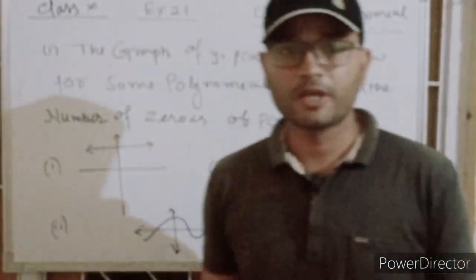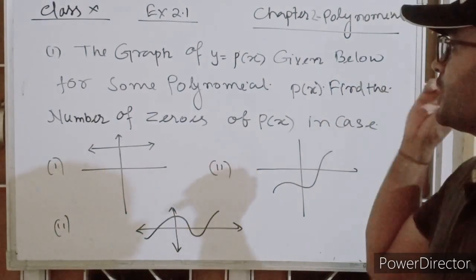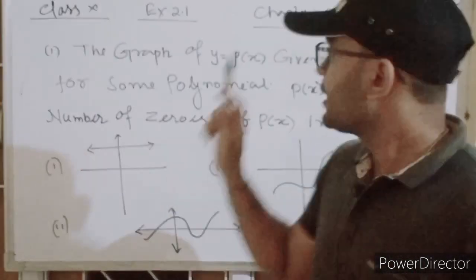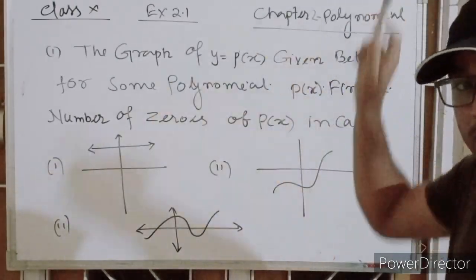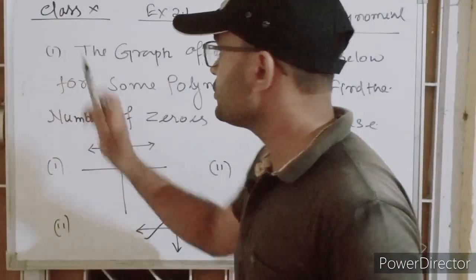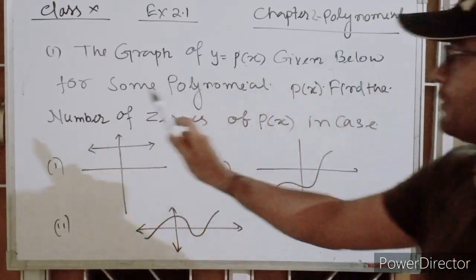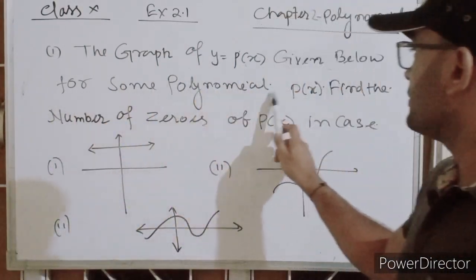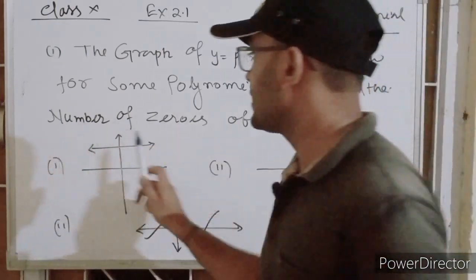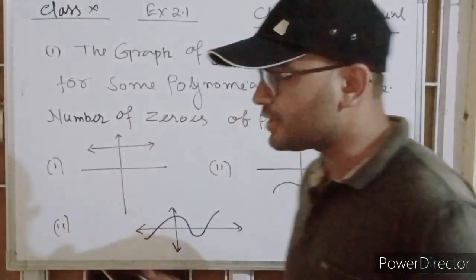Welcome everyone, welcome to Genome Classes. Today I am going to teach about polynomials. So third class, exercise 2.1, first question: I have to get a graph of y equal to p(x), given below. For some polynomial p(x), find the number of zeros of p(x) in each case from this figure.